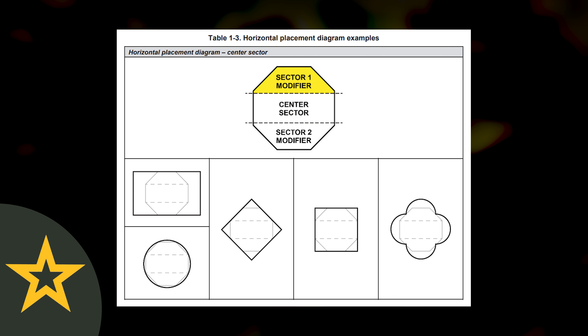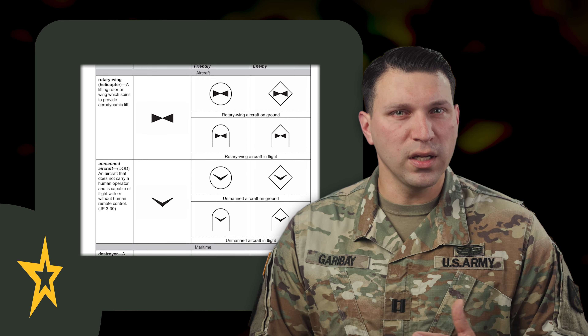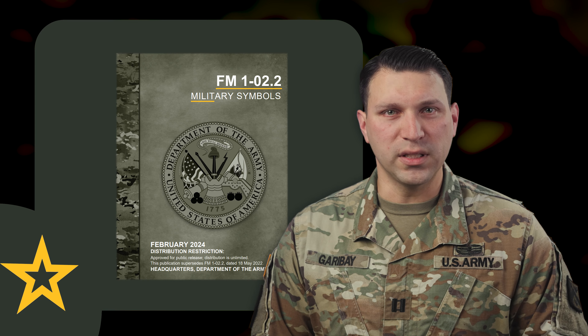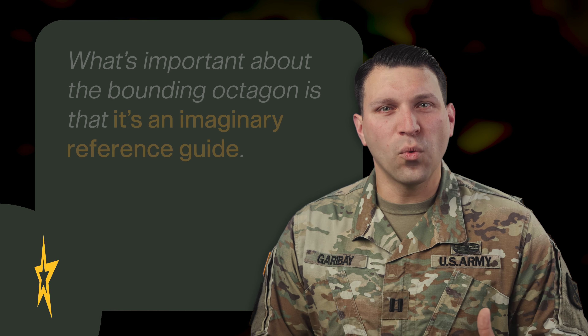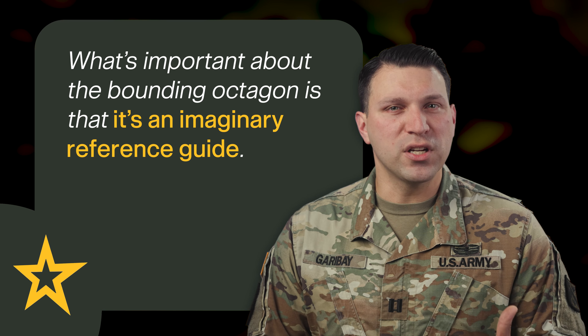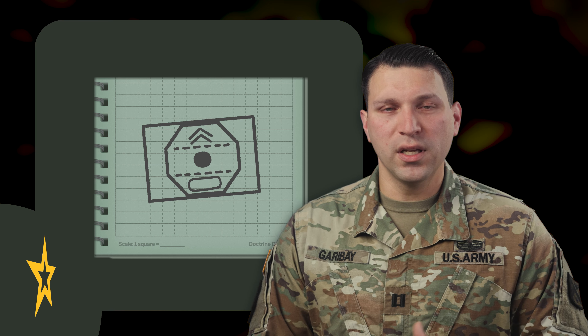Sector 1 modifiers go in the top, and sector 2 modifiers go in the bottom. You can find a full list of main, sector 1, and sector 2 modifiers in FM 1-02.2 Military Symbols. What's important about the bounding octagon is that it's an imaginary reference guide. You can use it for practice, but when you actually go to draw your symbol, the bounding octagon won't be there.